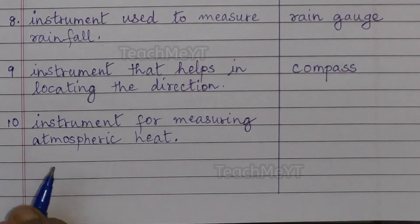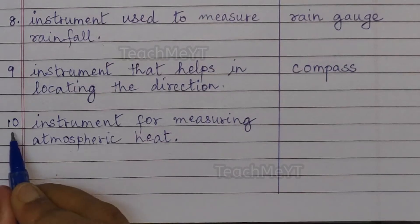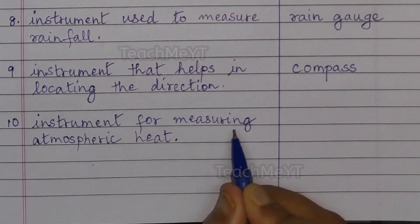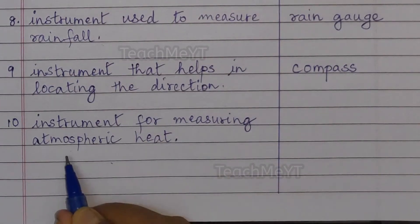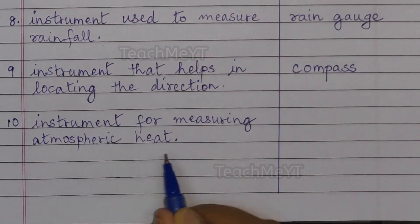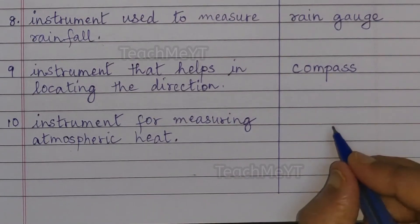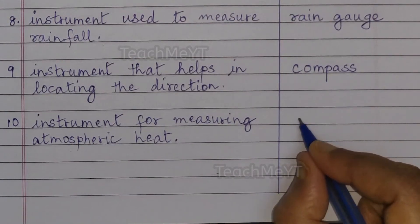Number 10. Instrument for measuring atmospheric heat is a calorimeter.